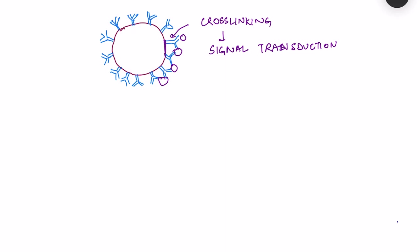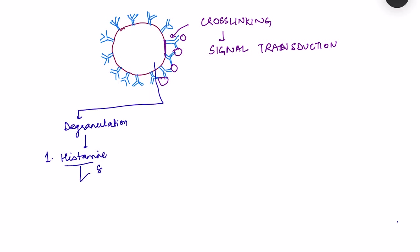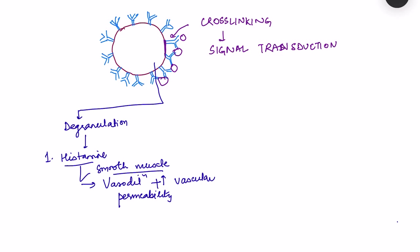There will be release of mediators of Type 1 hypersensitivity from the mast cell. First, mast cells have granules whose contents are released — this is known as degranulation, producing the primary mediators of hypersensitivity. The granule contents include the very important mediator histamine, which causes smooth muscle contraction, vasodilation, and increased vascular permeability.